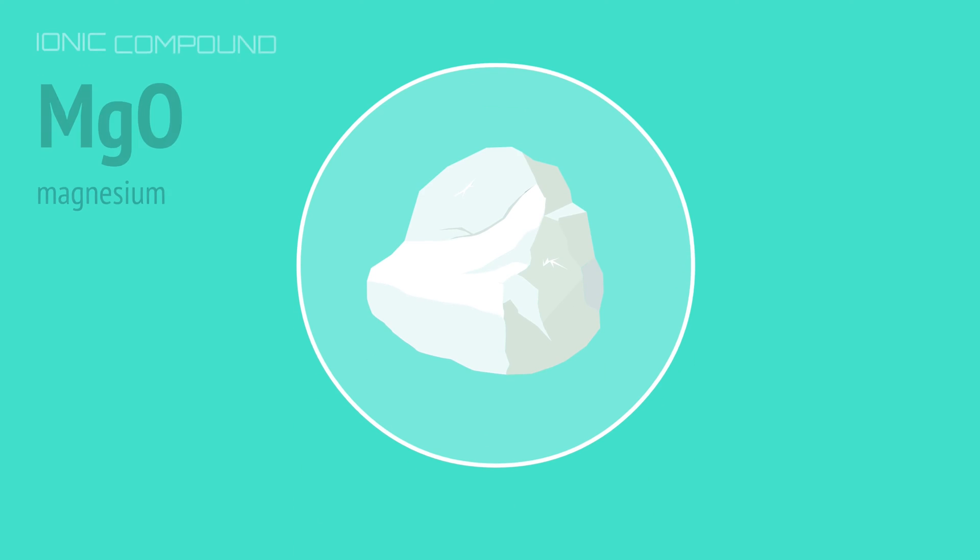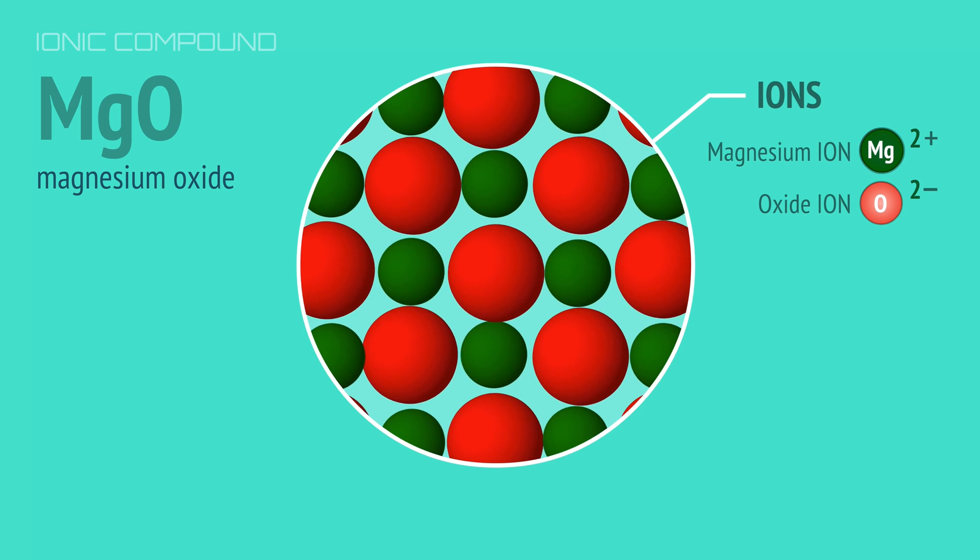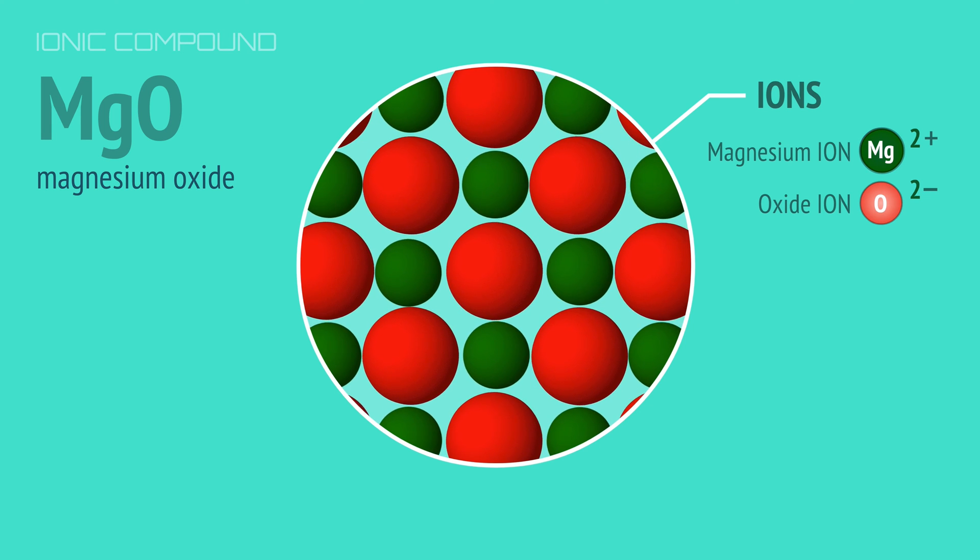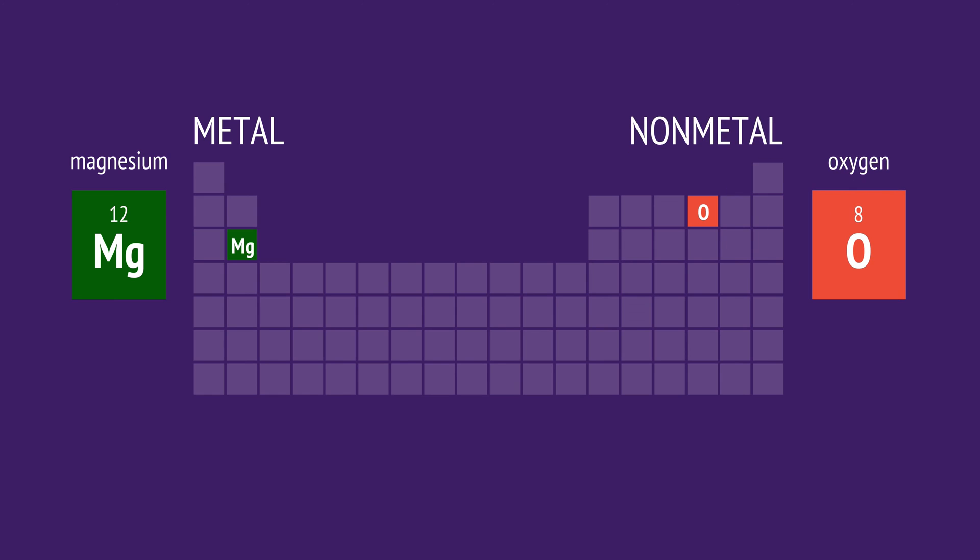The ionic compound magnesium oxide exists as a lattice of magnesium and oxide ions, bound together by ionic bonds. It's a compound of the metal magnesium and the non-metal oxygen.